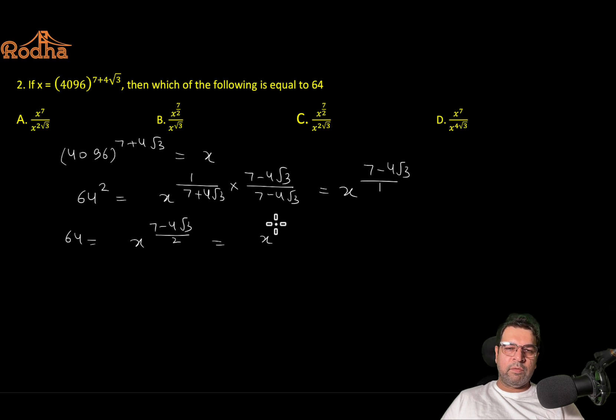Which is nothing but x to the power 7 by 2 divided by x to the power - because minus 4 root 3 by 2, that is 2 root 3. Can we have an option? x to the power 7 by 2 divided by x to the power 2 root 3. That is your option C. Did you get it? It is not Jugaad. Smart trick. I hope it is clear. Deliberately using options to satisfy.